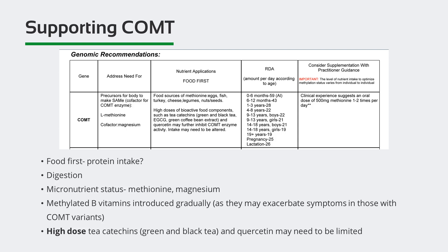The cellular micronutrient assay from Cell Science Systems provides valuable insight regarding micronutrient status within cells, and that assay also assesses amino acid status, including methionine. The helper or cofactor that supports COMT is magnesium. When it comes to supplementing with methylated B vitamins, too much overall and too fast can exacerbate symptoms for folks with COMT variants. If B12 is needed, it may be best to consider using hydroxy or adenosylcobalamin and add methylfolate if needed with gradual dose increase, if that's necessary. Consumption of COMT inhibitors like high-dose catechins from green and black tea and quercetin may need to be limited in the case of reduced COMT enzyme activity.